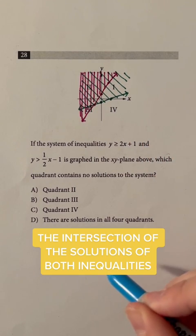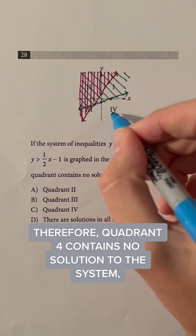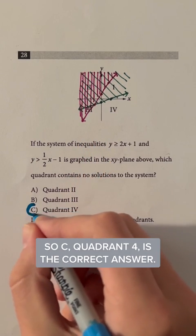The intersection of the solutions of both inequalities is in quadrants 1, 2, and 3. Therefore, quadrant 4 contains no solution to the system, so C, quadrant 4, is the correct answer.